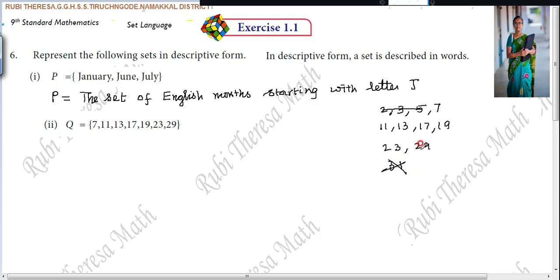7 will start with the set of, 29 will be the set of. How do you start? The set of prime numbers, not number, prime numbers between what? Between 5 and 31.